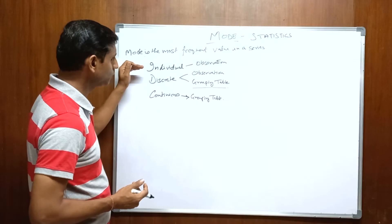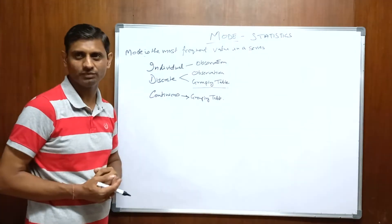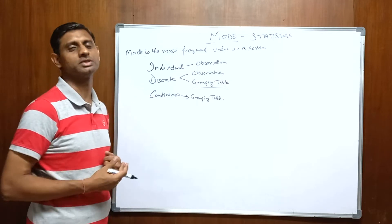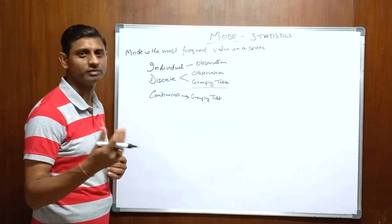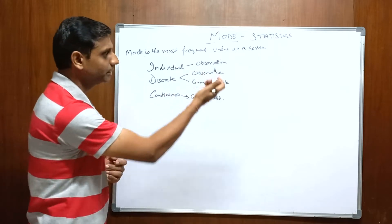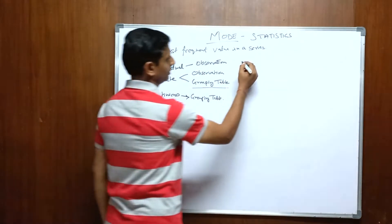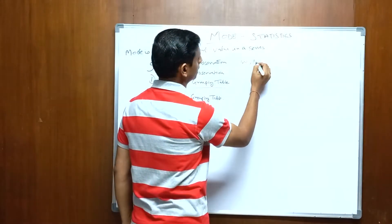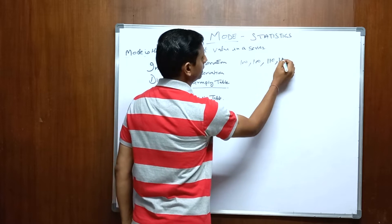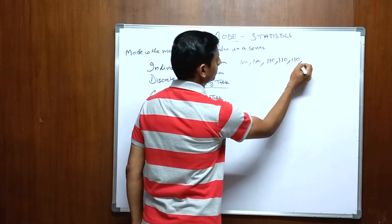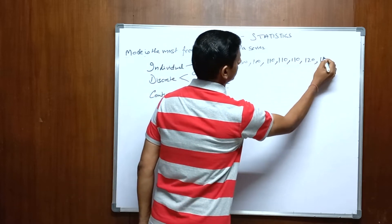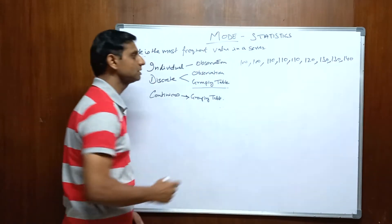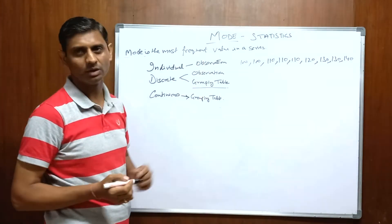In an individual series, as per the observation way, for example, let's suppose there is a restaurant and the restaurant is placing orders of different values. Let me write a couple of orders for our understanding. So the order values are: Rs.100, Rs.100, 110, 110, 110, 120, 130, 130 and 140. These are some orders and their order values.